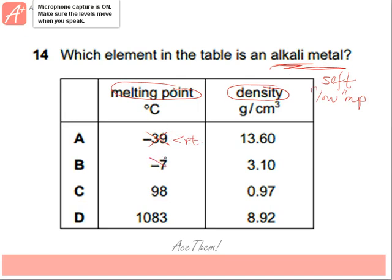This is also wrong, so one of these two. Now, 1083°C definitely is not a low melting point, so we know it's 98. The answer is C.